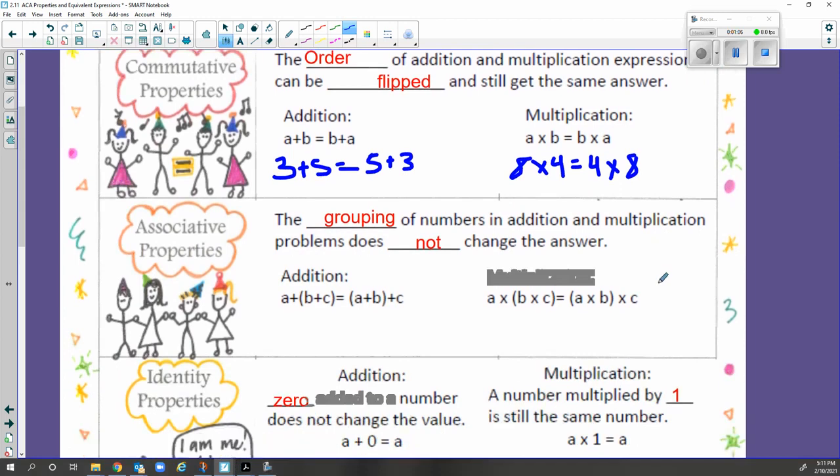The next property is the associative property. The associative property is the grouping of numbers in addition and multiplication problems does not change the answer. We just learned about grouping when we did our order of operations. And the really cool part about that is if it's all addition, only if it's all addition, we can change the brackets. It's not going to change our answer. The order at that point won't matter because it's all addition.